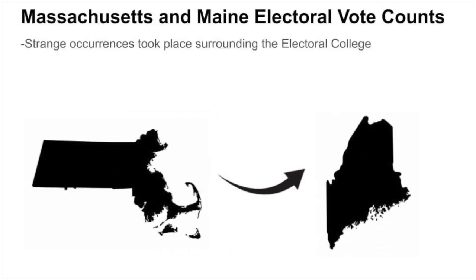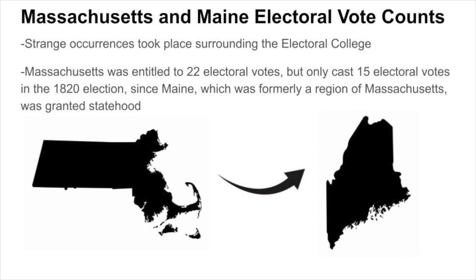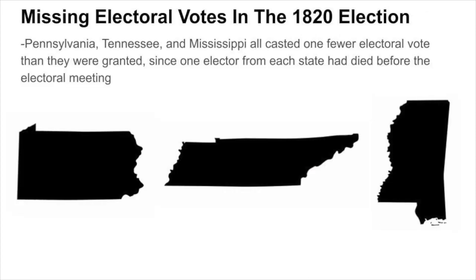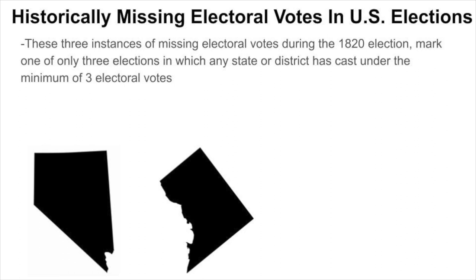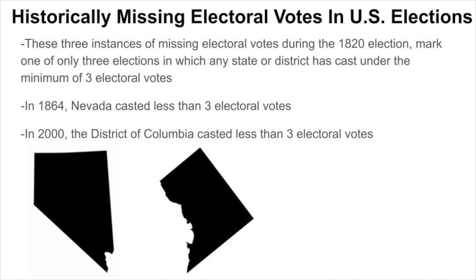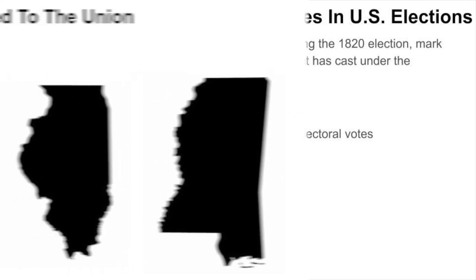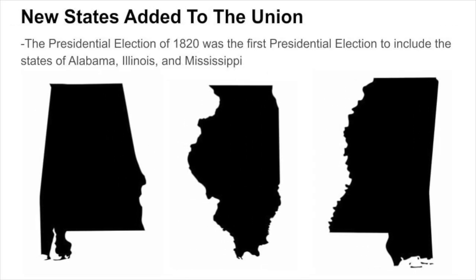Other strange occurrences also happened regarding the Electoral College. Massachusetts was entitled to 22 electoral votes, but only cast 15 in the 1820 election, since Maine, formerly a region of Massachusetts, was granted statehood. Likewise, Pennsylvania, Tennessee, and Mississippi all cast one fewer electoral vote than they were each granted, since one elector from each state had died before the electoral meeting. These three instances mark one of only three elections in which any state or district cast under the minimum of three electoral votes, with Nevada casting fewer in 1864 and the District of Columbia casting fewer in the year 2000. Additionally, the presidential election of 1820 was the first to include the states of Alabama, Illinois, and Mississippi.